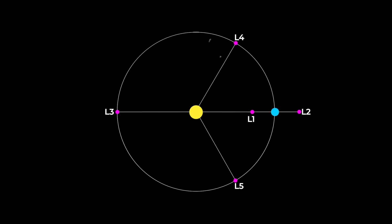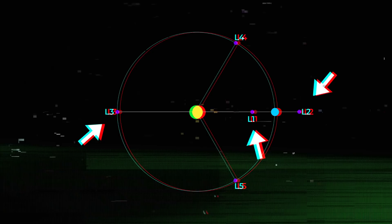There are five Lagrange points around major bodies like planets and stars. Three of them are positioned along the line that connects the two large bodies.